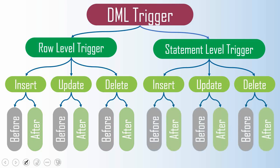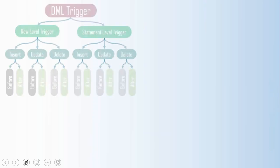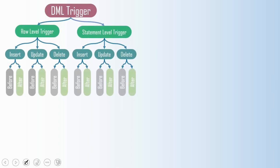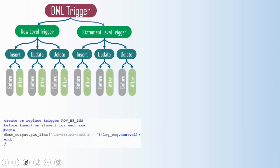So basically we have 12 different types of DML triggers — 6 fall under the row level trigger category and 6 fall under the statement level trigger category. Now let us see how to identify whether a given trigger is a row level or a statement level trigger.